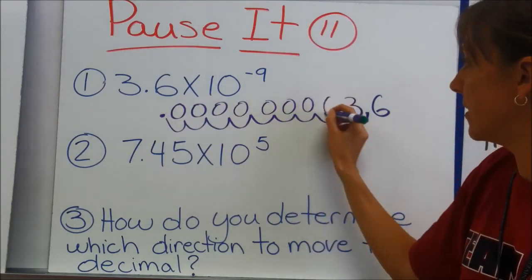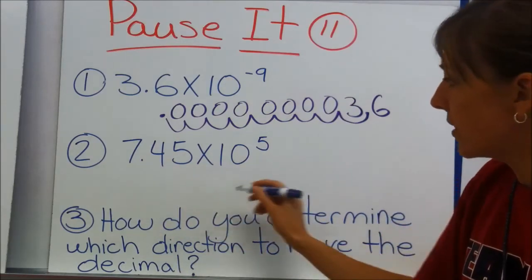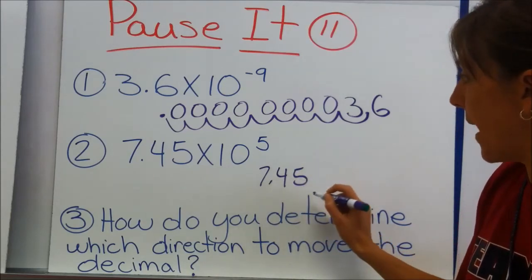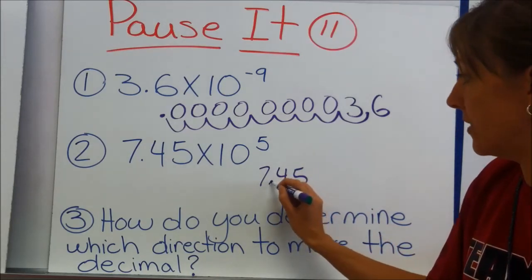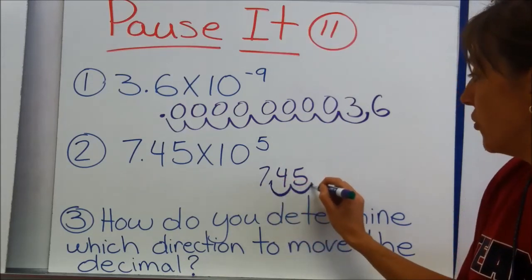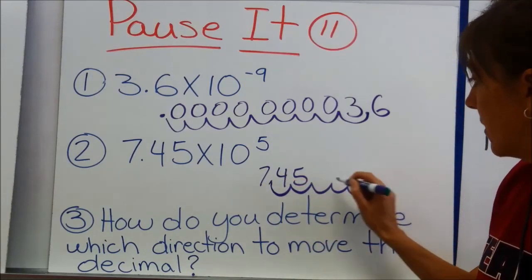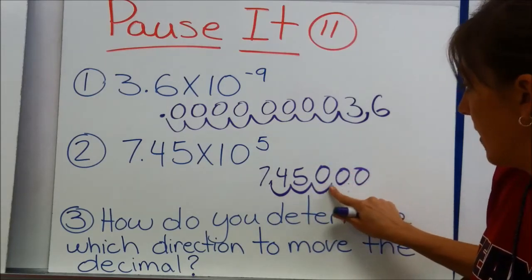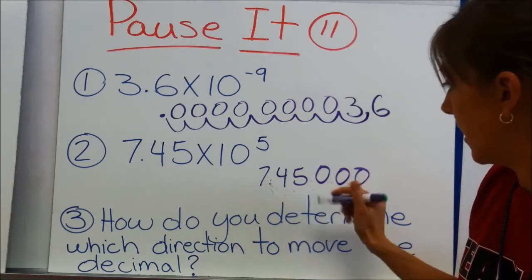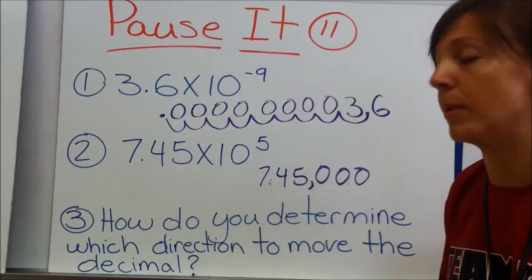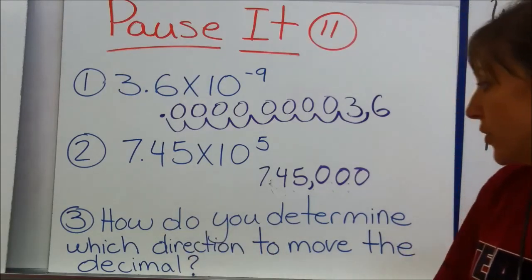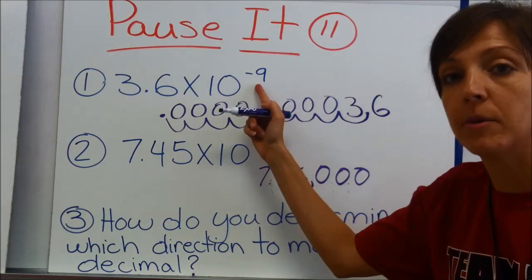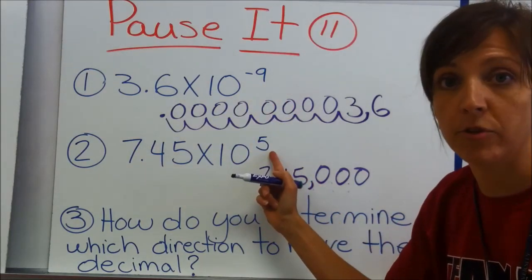7.45 times 10 to the fifth power — I'm going to move my decimal five places in a positive direction: 1, 2, 3, 4, 5. And I will put my comma here. Last question: how do you determine which direction to move the decimal? If you have a negative exponent, you move your decimal to the left. If you have a positive exponent, you move your decimal to the right.